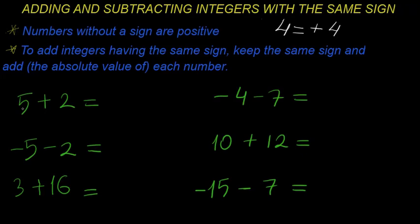The second rule: when we add or subtract two numbers, if the numbers have the same signs, then the answer will also have that sign. So if both numbers are positive, the answer will be positive. If we have two negative signs, the answer will be negative.